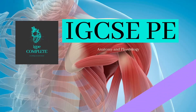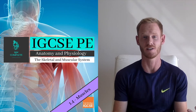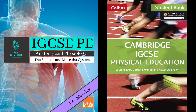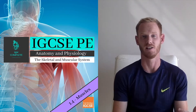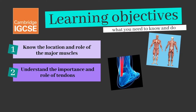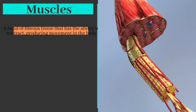Hello and welcome to another complete Cambridge IGCSE PE lesson. This is the fourth lesson in the chapter on the musculoskeletal system: muscles. As always we'll be focusing only on the learning objectives found in the official Cambridge textbook and we'll cover absolutely everything you need to know for your final exam. Our three learning objectives today are to know the location and role of the major muscles, to understand the importance and role of tendons, and to provide sporting examples for the movements each muscle creates.